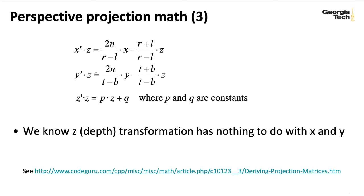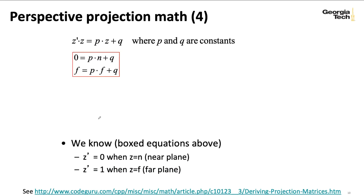So let's keep things consistent. We're going to take Z and we're going to map it to a new Z prime times Z and try to figure out something here that makes sense. So what we're going to do is suppose that our near plane is going to map to zero, a Z prime of zero.